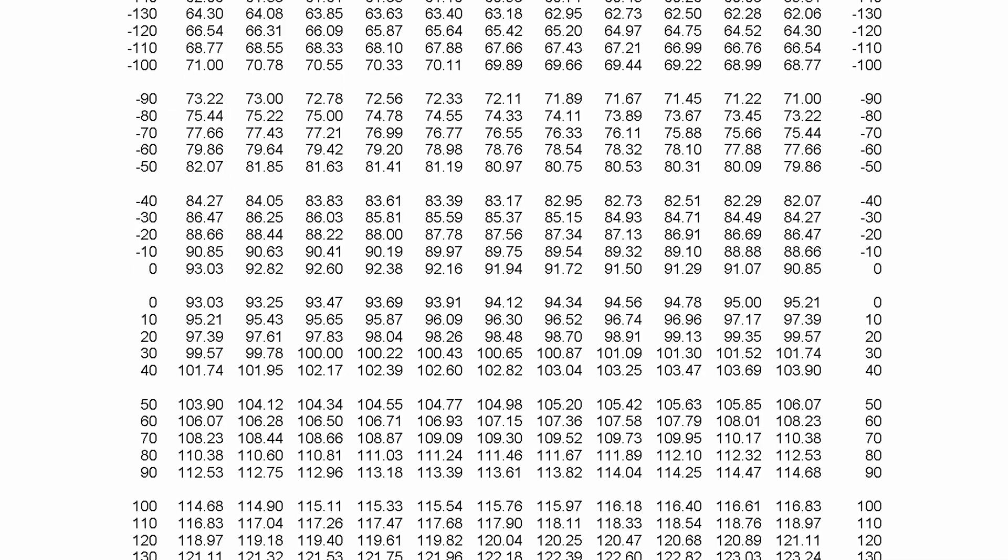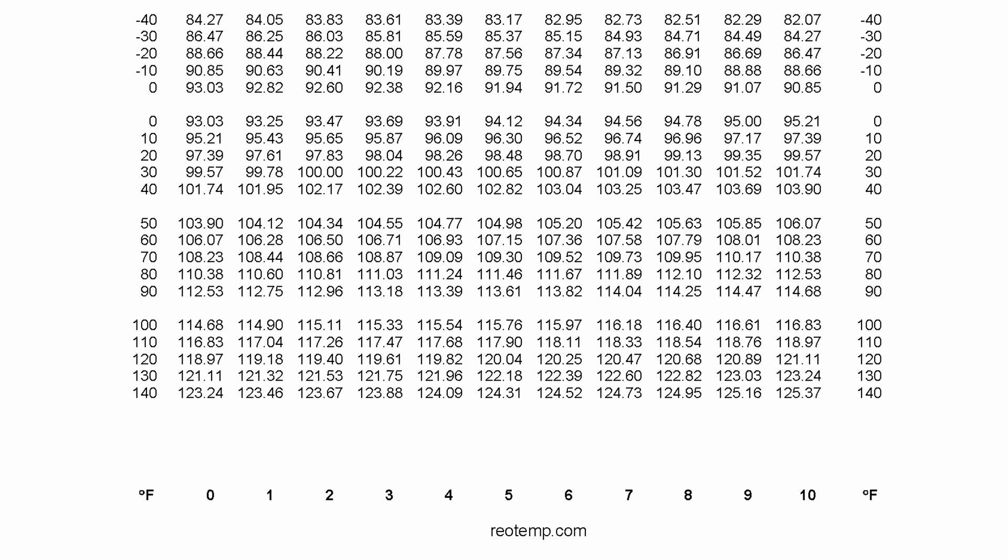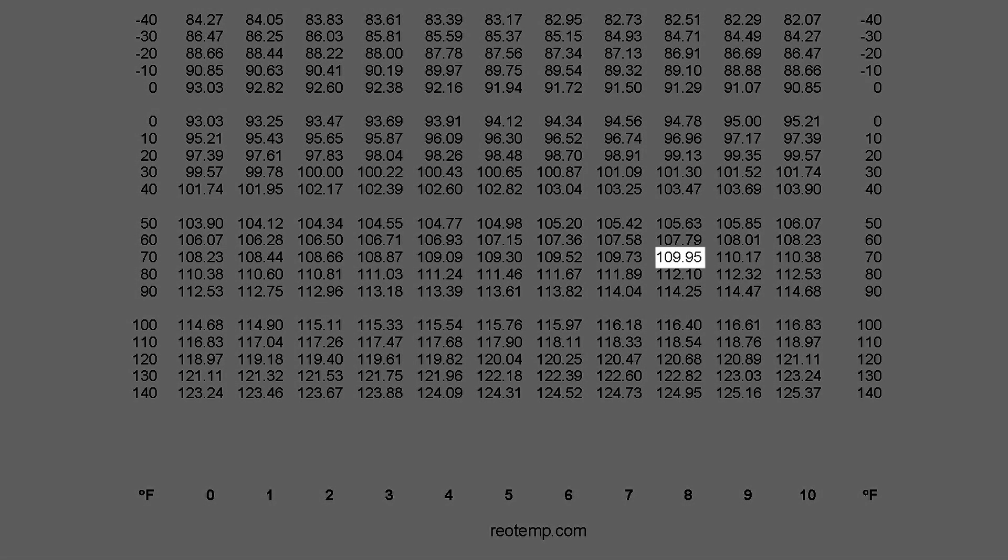First, use a lookup table to determine the expected resistance of the RTD based on the current room temperature. Here in San Diego, it's sunny and about 78 degrees out, so our expected resistance is about 109 ohms for a PT100/385 alpha RTD.